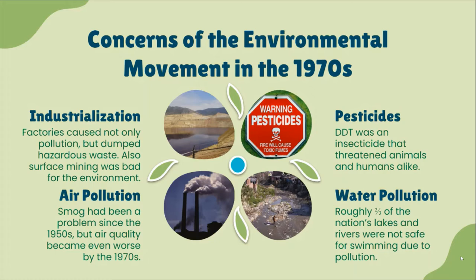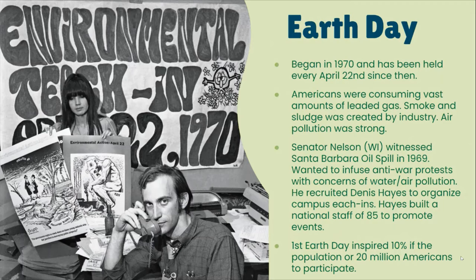Air pollution and smog had been a problem since the 1950s, but air quality became much worse by the 1970s. It probably wasn't until the 1990s or 2000s that it became cleaner — the smog and pollution today is nothing near what it was in the 1970s. Pesticides were a major problem as previously mentioned, and water pollution meant roughly two-thirds of the nation's lakes and rivers were not safe for swimming or fishing due to pollution.